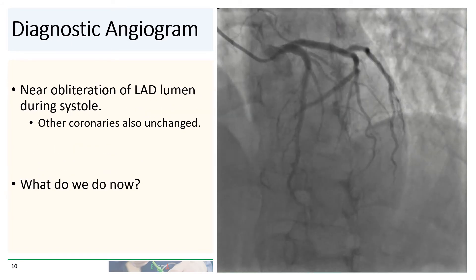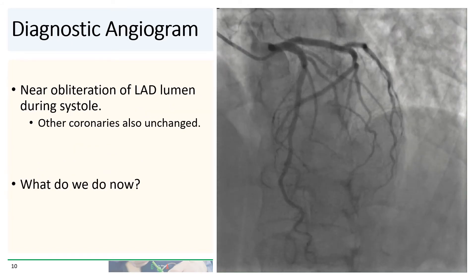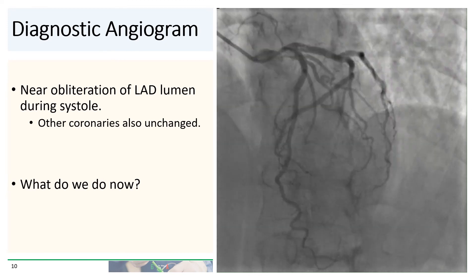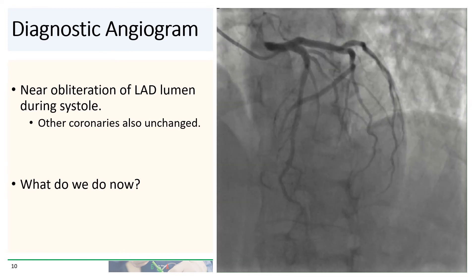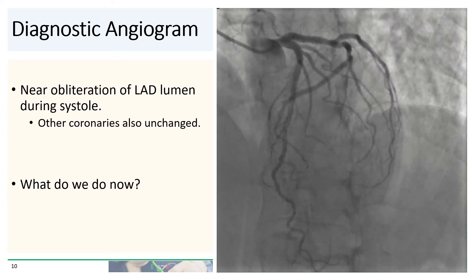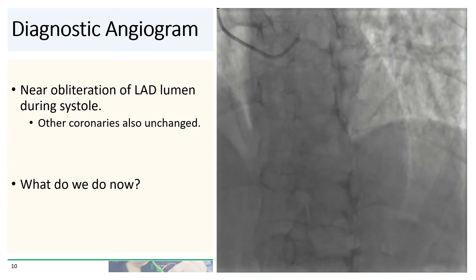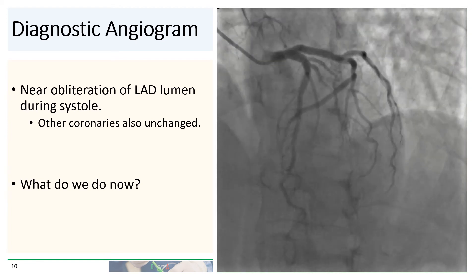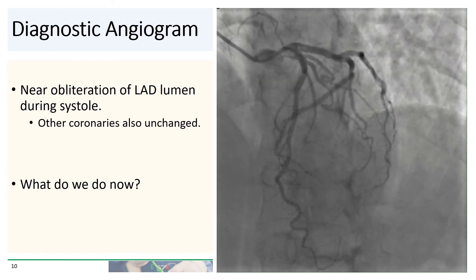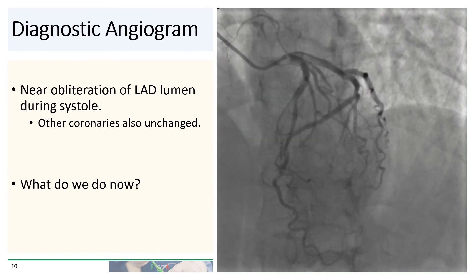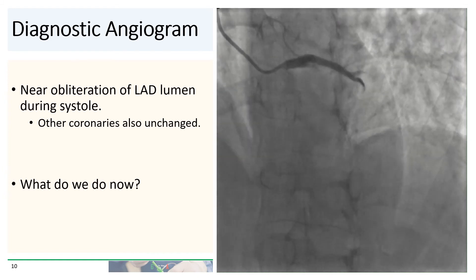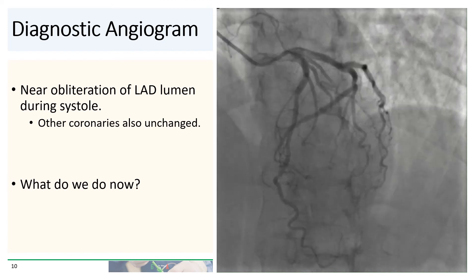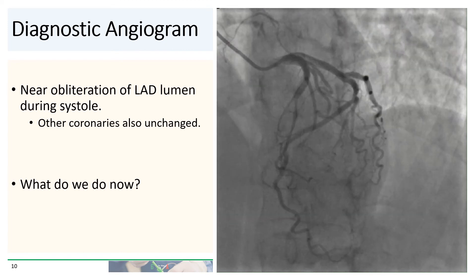On relook, her coronaries are essentially unchanged. Again, we see the long myocardial bridge with near obliteration of the lumen of the LAD during systole. So what are our options now? This patient is already on fairly aggressive medical therapy. Is there an invasive option? Can you stent a bridge?